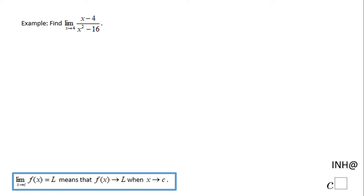Welcome or welcome back at I Need Help at C Square. In this example we need to find this limit: limit when x approaches 4 of (x - 4) / (x² - 16). So the first thing you want to do is to plug this value 4 in and see what you get.